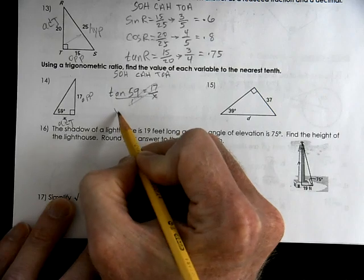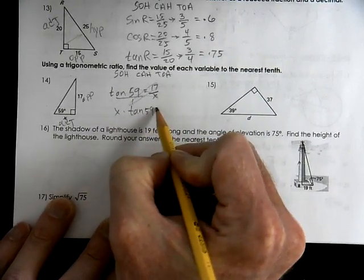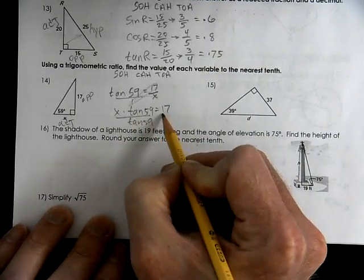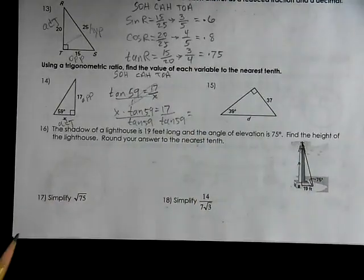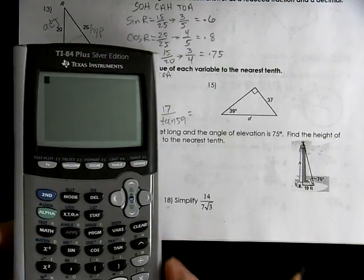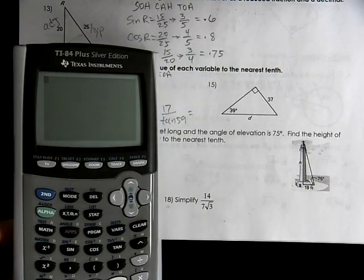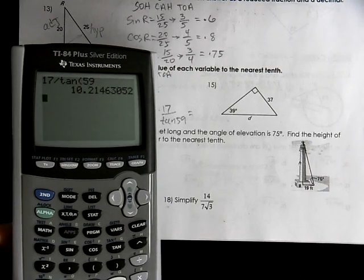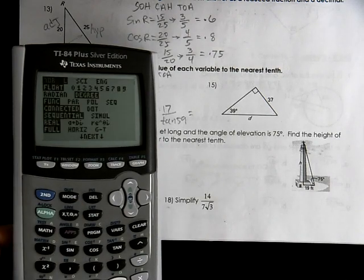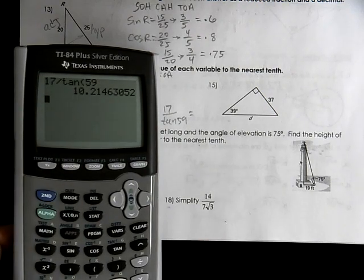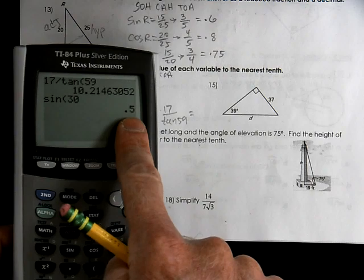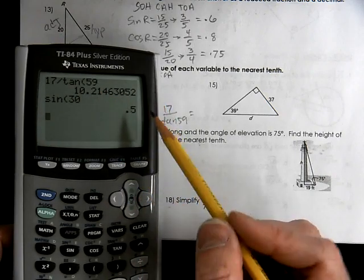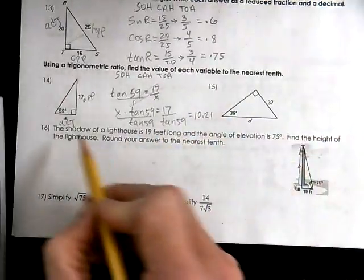We cross multiply: x times tangent of 59° equals 17. Then divide by tangent of 59°, giving x = 17 divided by tangent of 59°. Be sure you're in degree mode — hit the mode button and confirm degree is highlighted, or verify by checking sine of 30° equals 0.5. So 17 divided by tangent of 59° gives us x = 10.21.